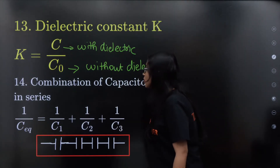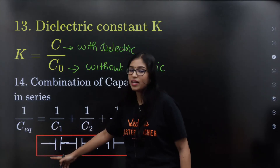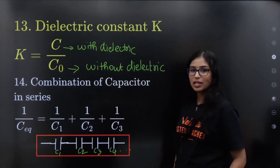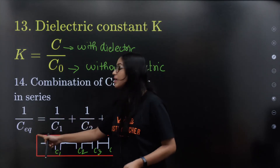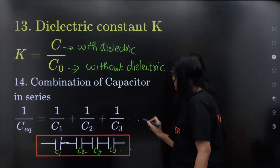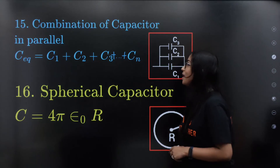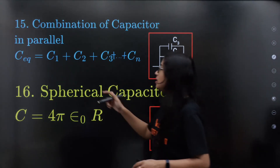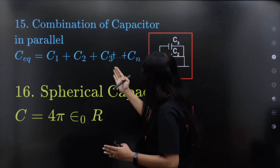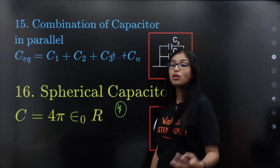Combination of capacitors in series: the equivalent capacitance 1/Ceq = 1/C1 + 1/C2 + 1/C3 and so on. For parallel combination, Ceq = C1 + C2 + C3 and so on. These are important formulas.